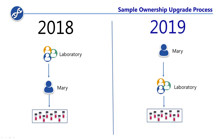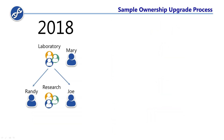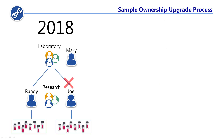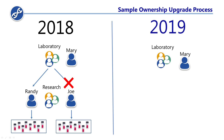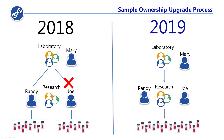Now let's imagine in 2018 that Mary's group was given access to samples owned by another user, Randy, but not access to user Joe's samples. If Randy and Joe are both in the group Research, this will create a conflict during upgrade. FreezaWorks will automatically fix this conflict in 2019 by giving the Laboratory group access to the Research group's samples, regardless of Joe's personal settings — in other words, the least restrictive setting from 2018 will be used.